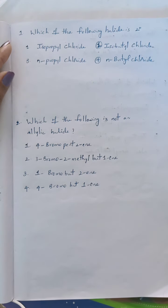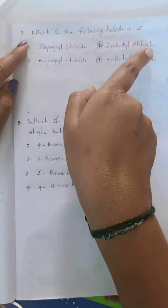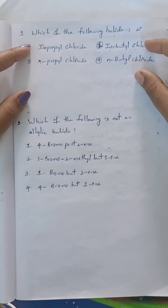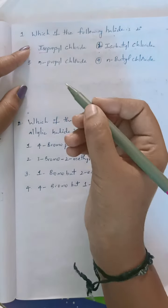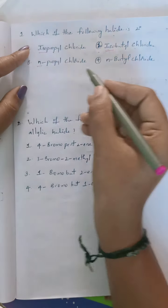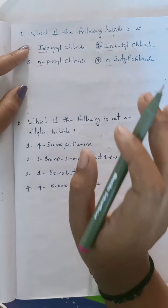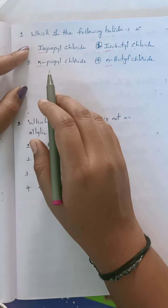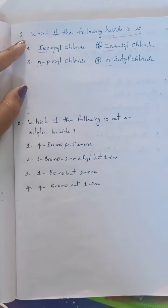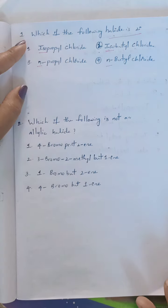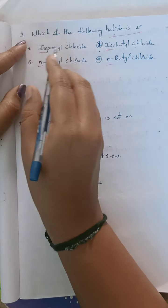All these questions are there in your PDF — you just check once. The first question: which of the following halide is secondary? They have given common names, indicated by prefixes like iso and n (normal). Among all of these, we want to find out which is the secondary halide. If we write the structures of these compounds, it will become easy. First, write isopropyl chloride — propyl indicates three carbons.